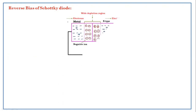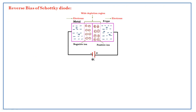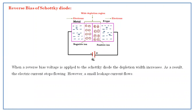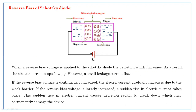In the reverse bias of the Schottky diode, we reverse the terminals — the negative terminal is connected to the metal and the positive terminal to the N-type. When a reverse bias voltage is applied, the depletion region increases and becomes very wide. As a result, electric current stops flowing, though a small leakage current does flow. If the reverse bias voltage continuously increases, the electric current gradually increases due to a weak barrier. If the reverse bias voltage is largely increased, a sudden rise in electric current causes the depletion region to break down, which may permanently damage the device. Therefore, in reverse bias, we must apply voltage only up to the breakdown voltage.